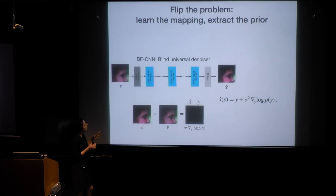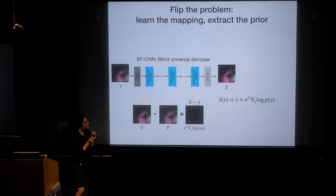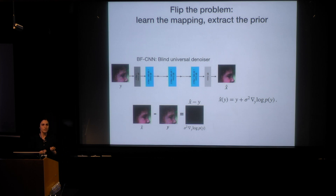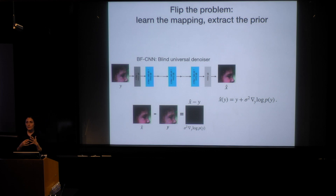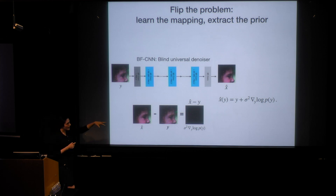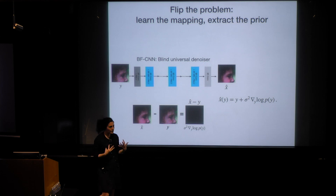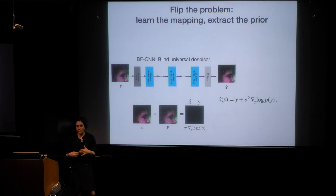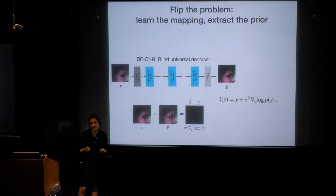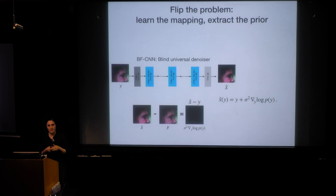More specifically, this is the architecture I'm using — it has 20 layers of convolutions and ReLUs. Importantly, it's blind and universal, meaning that during training we sample a standard deviation of the Gaussian noise from a uniform distribution in a continuous way and add samples of noise to the input. So this denoiser is able to remove noise with different standard deviations, meaning it has an infinite continuous family of gradients of different priors embedded in it. It is also blind — you don't need to tell it what the standard deviation of the noise is; it can estimate that from the image.